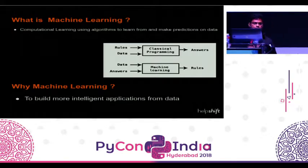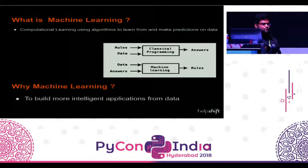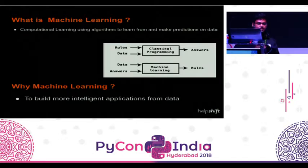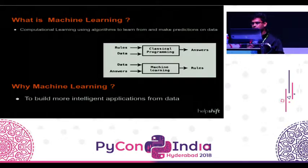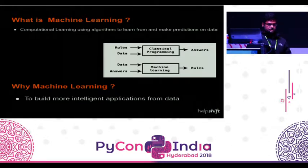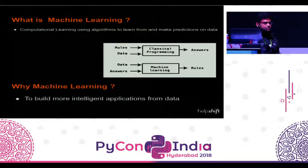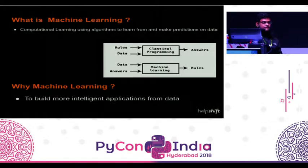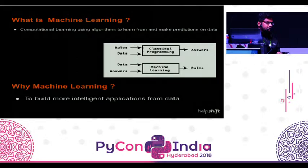Why machine learning? Why do we care about it? We care about it because we want to build more intelligent applications. More intelligent applications that we use day-to-day — like Gmail and Maps — are fully powered by machine learning. We want to build applications that are powered fully by machine learning.